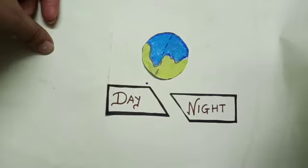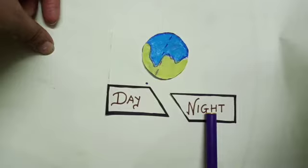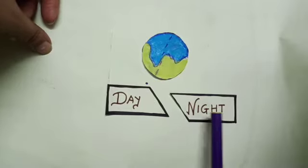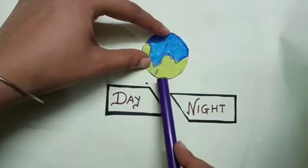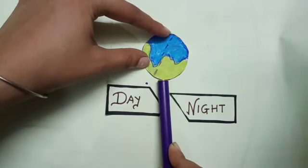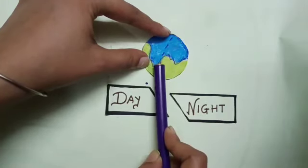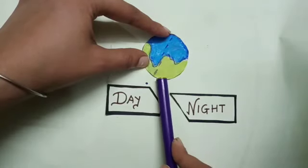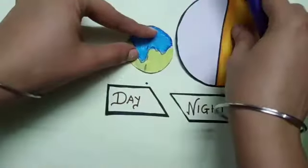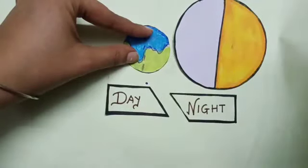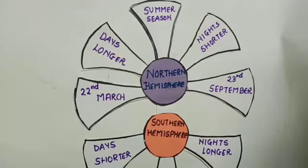Moving on to the next part. We know that the length of the day and night is not always equal. This happens because of the earth's inclined axis. We have studied about the inclined axis — it means the earth's position is slightly tilted. We have also studied about the revolution of the earth around the sun. So why and how do these changes take place? Let's see that.